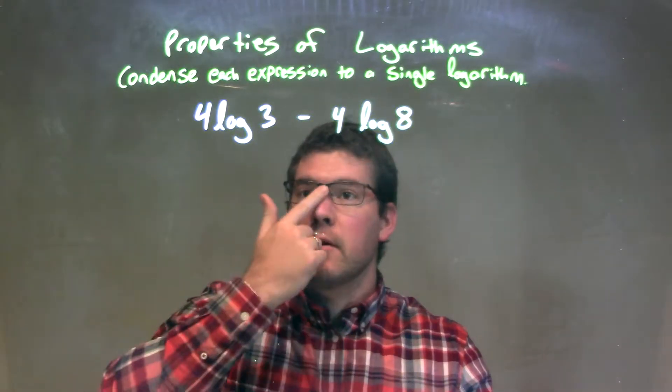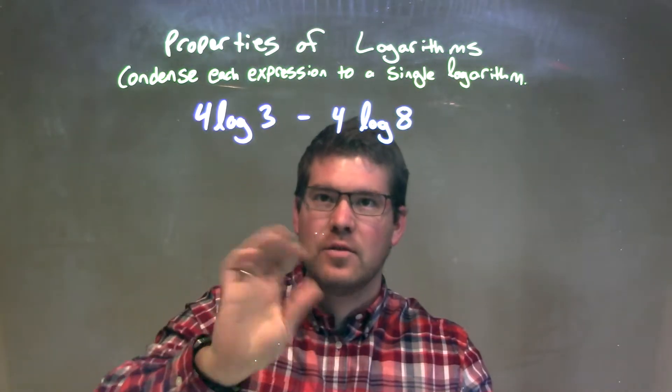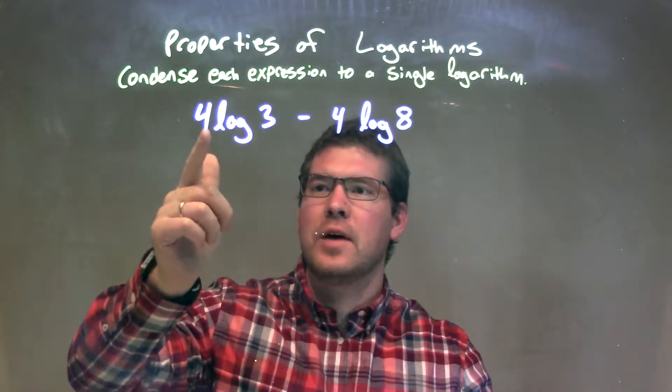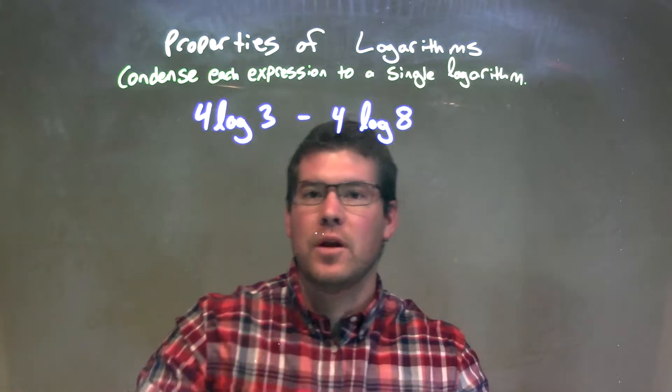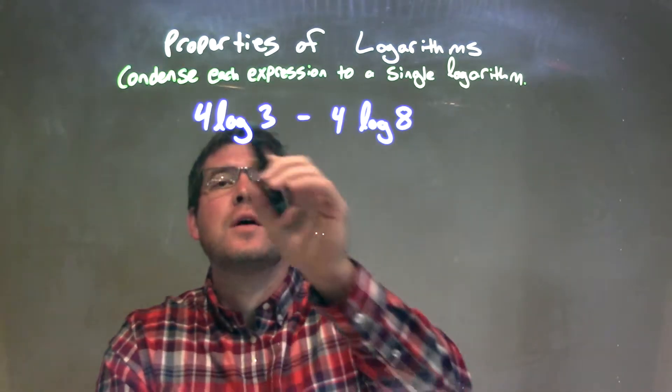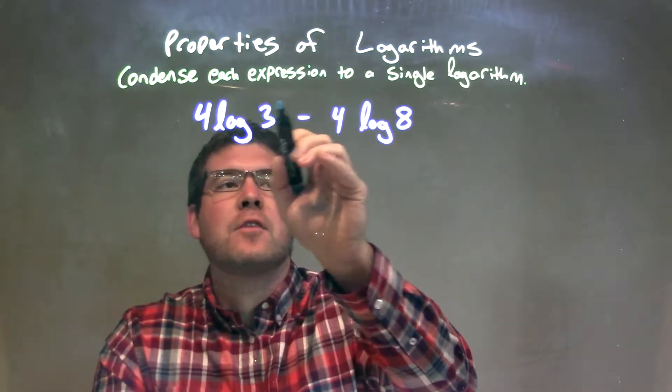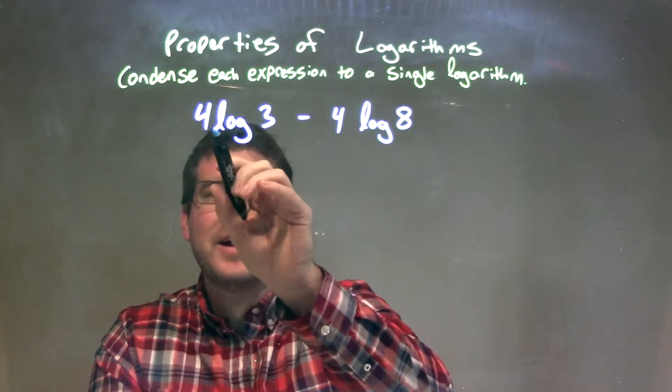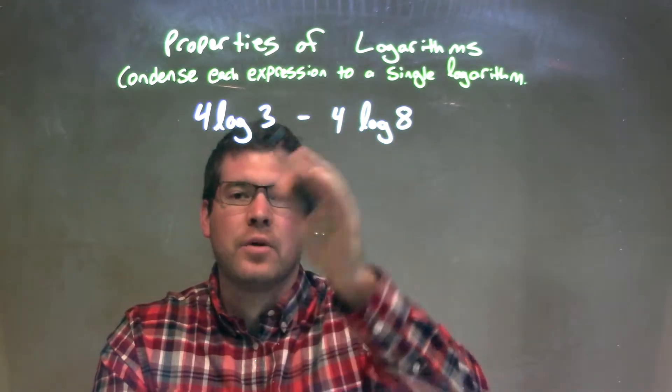From there, since I'm going to condense this, there are a few ways to go about it. What I'm going to do is—I see a 4 in front of each of these logarithms, so I'm going to put that 4 as the exponent of each one. Because it's written out front, you multiply it, but you put it as the exponent of the number inside.